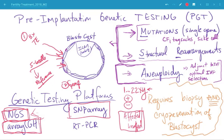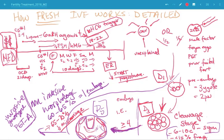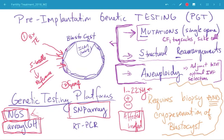The cons of aneuploidy screening: it does require an invasive procedure on the embryo. Up to this point, day five biopsy has not been shown to be harmful — we do know it is harmful to biopsy on day three, which leads to lower pregnancy rates, but current conventional wisdom is that day five biopsy does not cause harm. However, we're only about five years into biopsying embryos at large scale on the fifth day, so stay tuned.